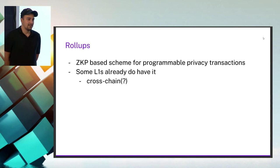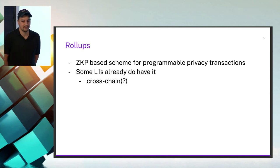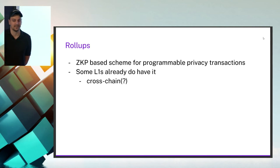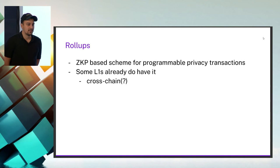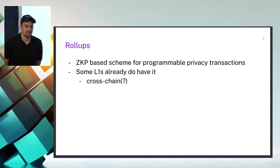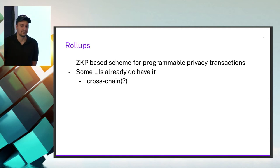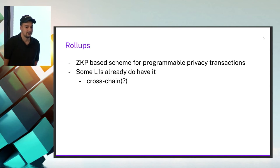Another method for bringing more privacy on-chain is rollups. They are based on zero-knowledge proofs — these are schemes for programmable privacy transactions. There are plenty of projects building on layer-two solutions on Ethereum to bring such private transactions on-chain, such as ZK-Sync and Aztec, and others.